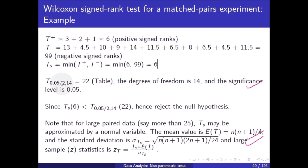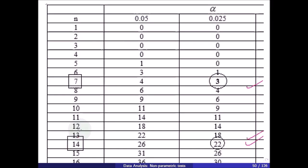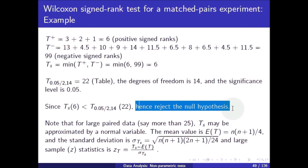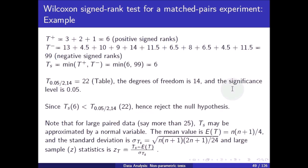The significance level is 5% and the total number of pairs is 14, so the table value is t_{0.025, 14} = 22. The calculated T_s value of 6 is less than the table value of 22, so we reject the null hypothesis. Note that for large pair data (more than 25 pairs), T_s may be approximated by the normal distribution.